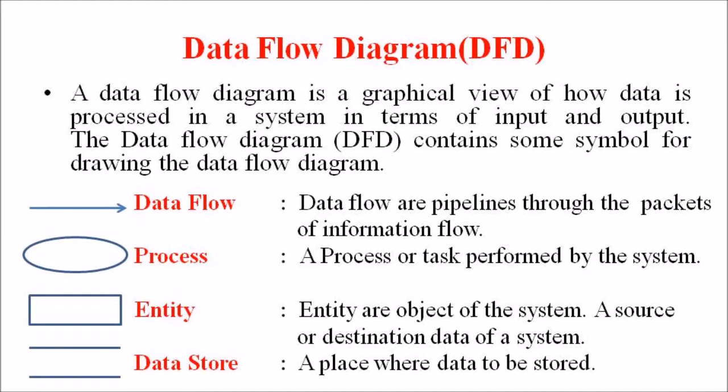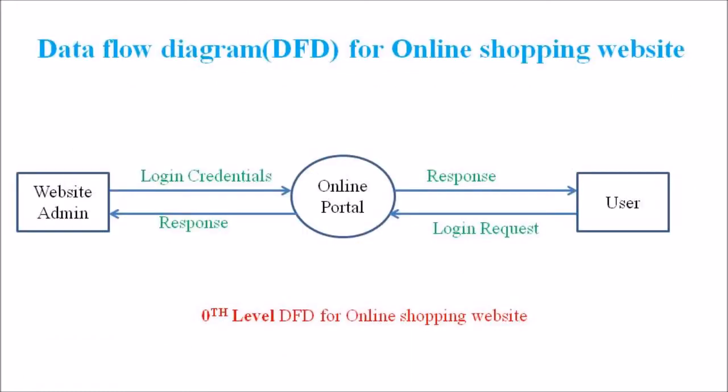The second symbol is the process, which is a task performed by a system and is represented in the diagram by a circle or an ellipse. The third is entity — entities are objects of the system that are a source or destination of data, and they are represented by rectangular boxes. The fourth is the data store, which is the place where data is stored, represented by two parallel lines.